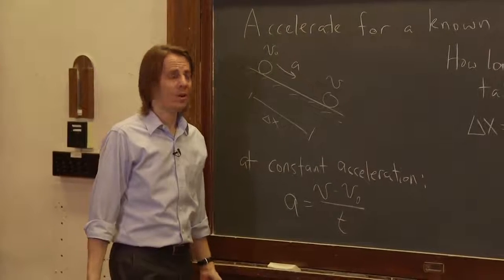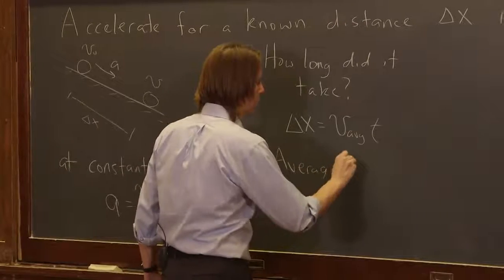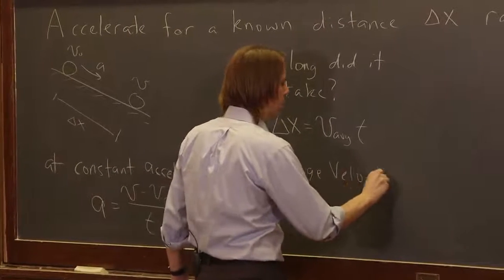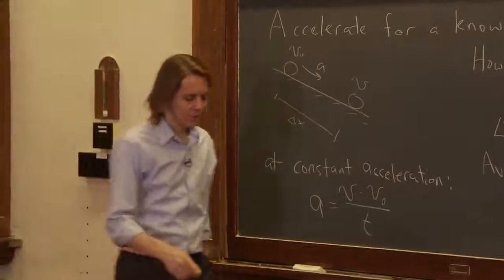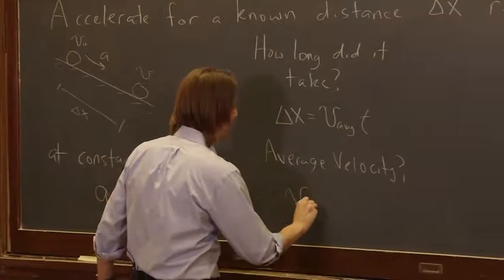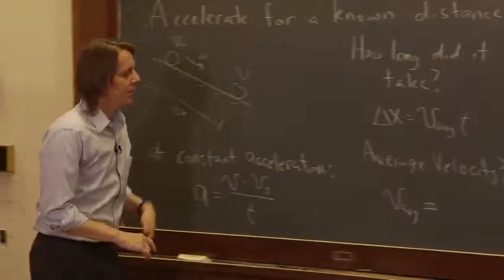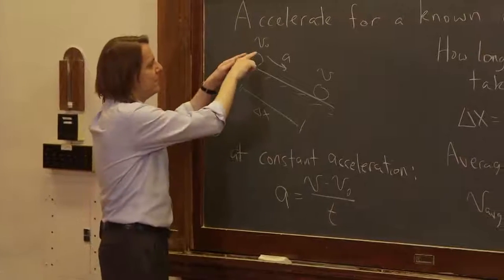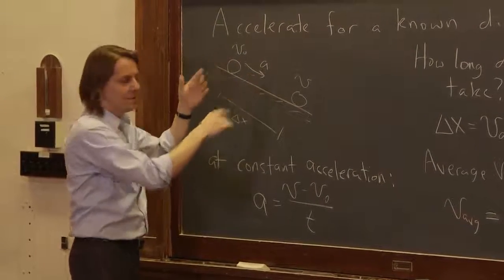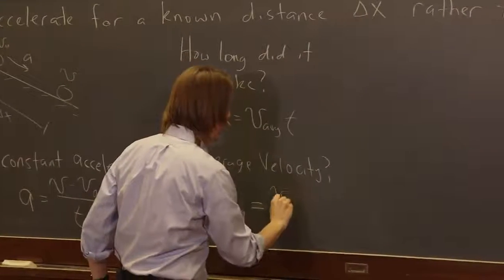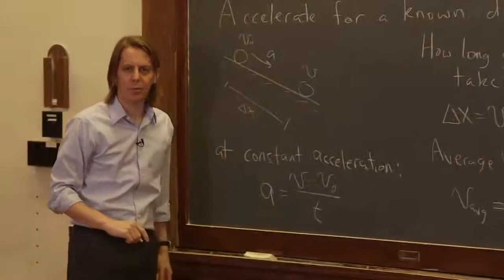But we don't know the average velocity. Well, under uniform acceleration, v average, in this case, it's really just sort of a time-weighted average of all the velocities between v-naught and v. So it's really, in this case, it is the average. It is v-naught plus v over 2. It's the average of those two numbers.